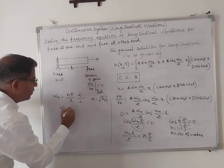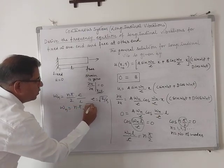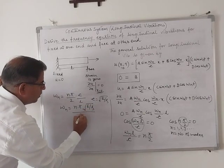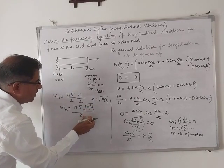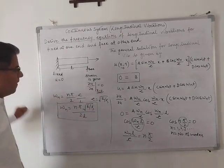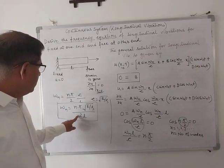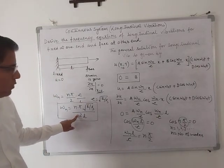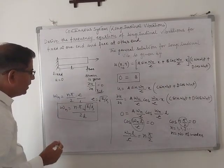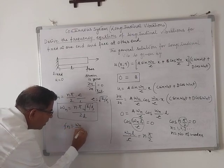So we put the value of omega_n equal to n * pi * sqrt(E/rho) / (2l). This is the frequency equation for this fixed-free type.